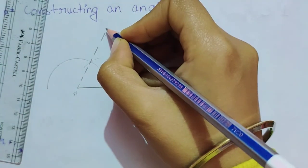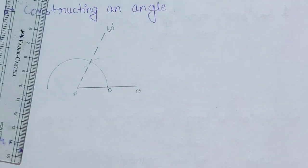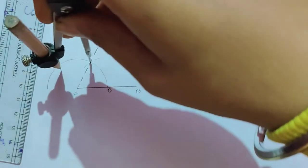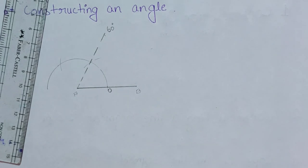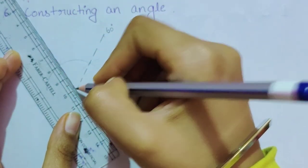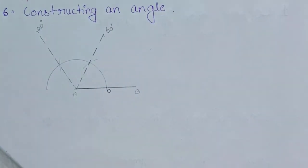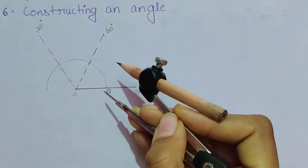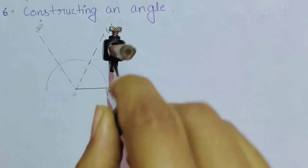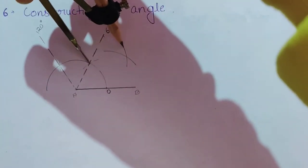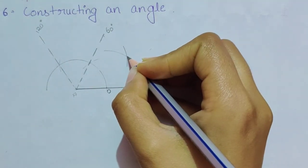Keeping the same compass length, place the pointer on the 60-degree arc point and cut another arc — this gives 120 degrees. Join it to the base line using a ruler. For 30 degrees, which is the angle bisector of 60 degrees, take a larger compass length, cut arcs from both the 0-degree and 60-degree points, and draw a line through their intersection to bisect the 60-degree angle.